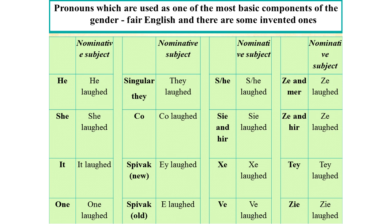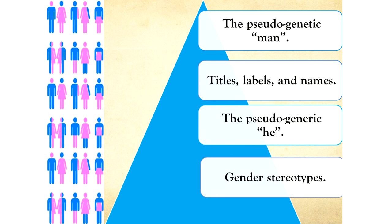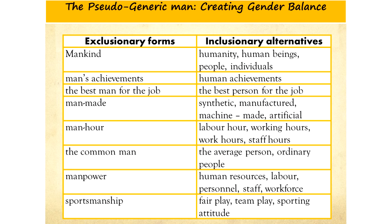There are job titles especially sensitive to gender-biased English. We should use the many counterparts and equivalents available in the English word stock to find adequate gender-free or inclusive variants. A very important issue is the pseudo-generic man. We should avoid the word man in order to be gender fair and gender free. For example, mankind is biased — instead, use humanity, human beings, people, or individuals. Man's achievements should become human achievements. The best man for the job should become the best person for the job.